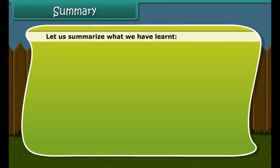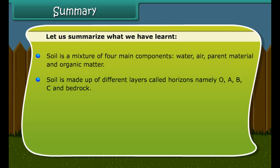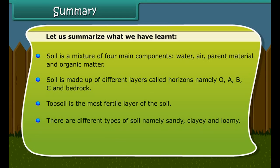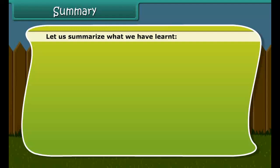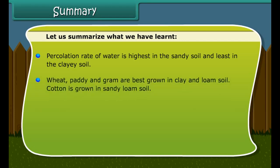Let us summarize what we have learned. Soil is a mixture of four main components: water, air, parent material and organic matter. Soil is made up of different layers called horizons, namely O, A, B, C and bedrock. Topsoil is the most fertile layer of the soil. There are different types of soil namely sandy, clay and loamy. Soil erosion is a process of removal of the top layer of the soil. Percolation rate of water is highest in sandy soil and least in clay soil. Wheat, paddy and gram are best grown in clay and loam soil. Cotton is grown in sandy loam soil.